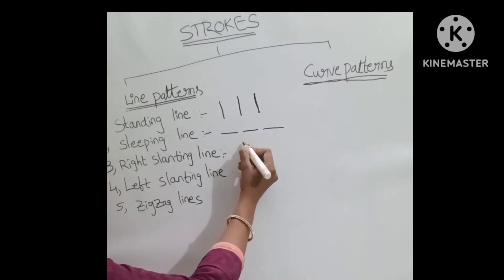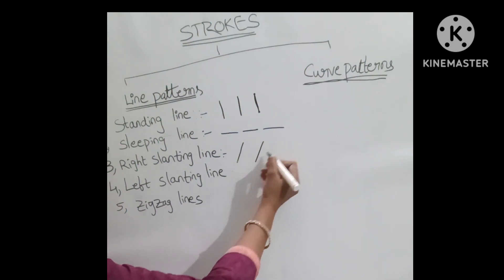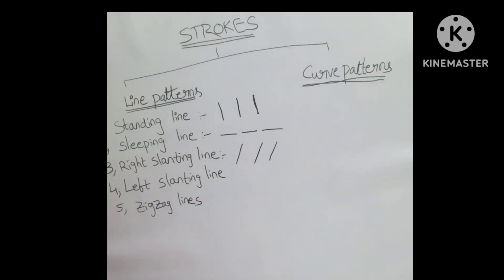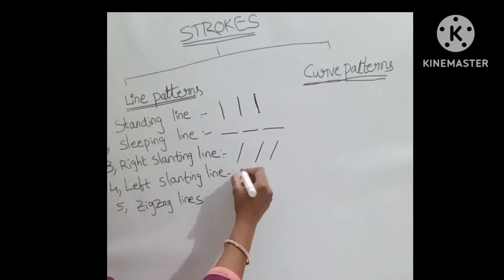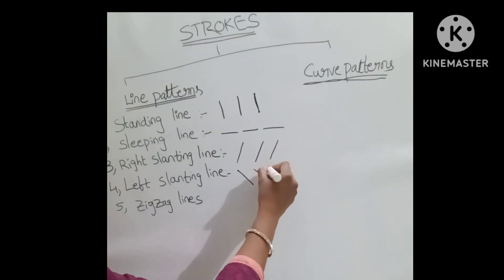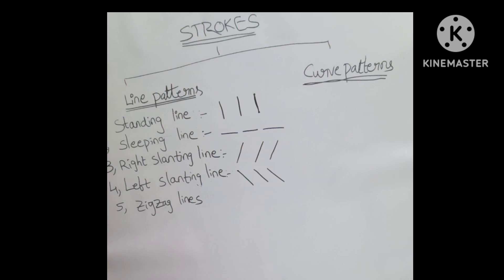Next, right slanting line. Start at the right side, going downwards. This is the right slanting line. Left slanting line — starting towards the left, going towards the bottom. This is the left slanting line.